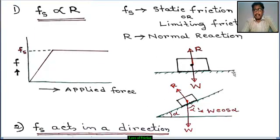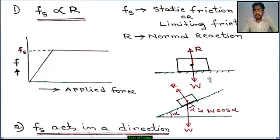This is a rough horizontal plane and this is the block. The weight of the block acts downward, weight W. R is the normal reaction, acting upward, perpendicular to the plane. In this case, R equals W.